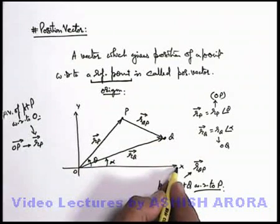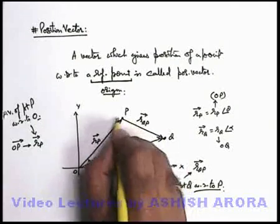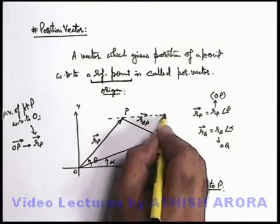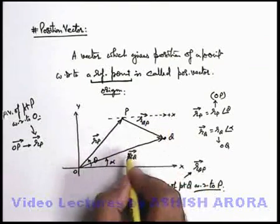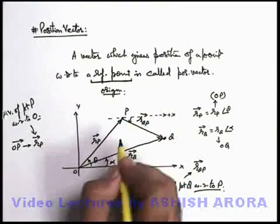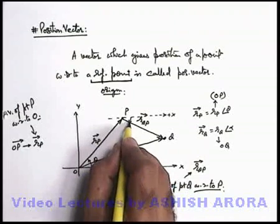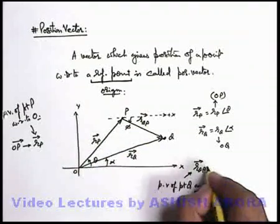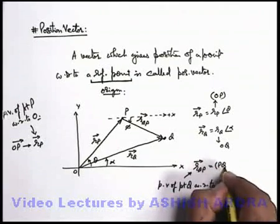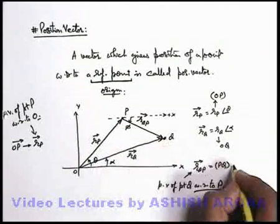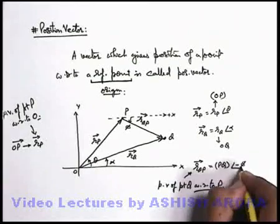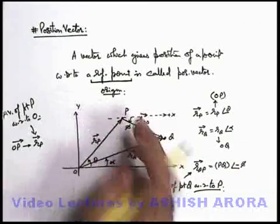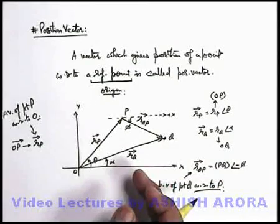And the angle if we measure from the positive direction of x axis, say if we just consider a line which is positive direction of x axis, whatever this angle is, this angle will give us, say if this angle is phi, so we can simply write r_QP is equal to magnitude, its magnitude is line PQ length, and angle we'll write it minus phi. By geometry we can also calculate the value of this angle phi.